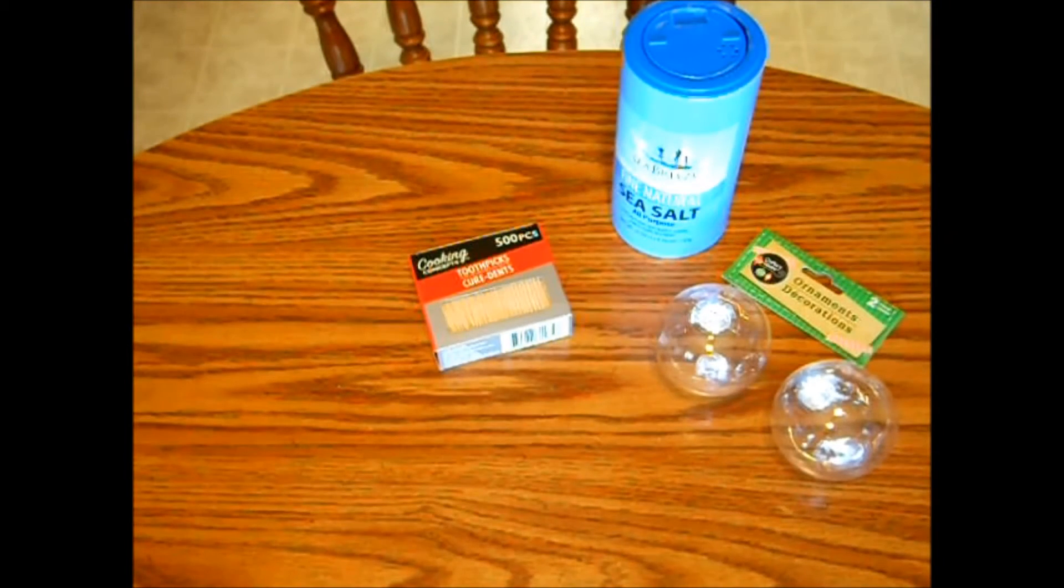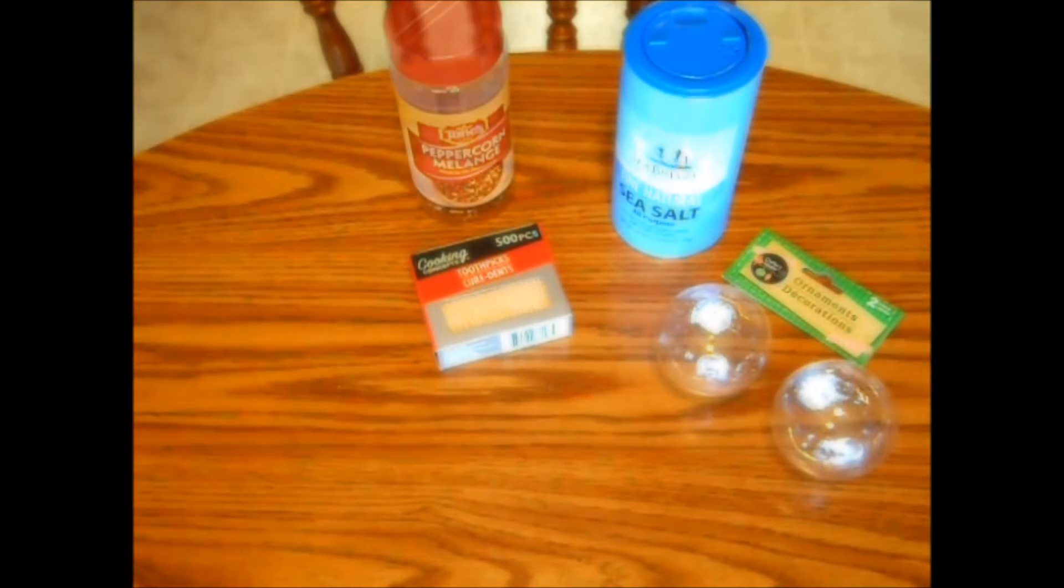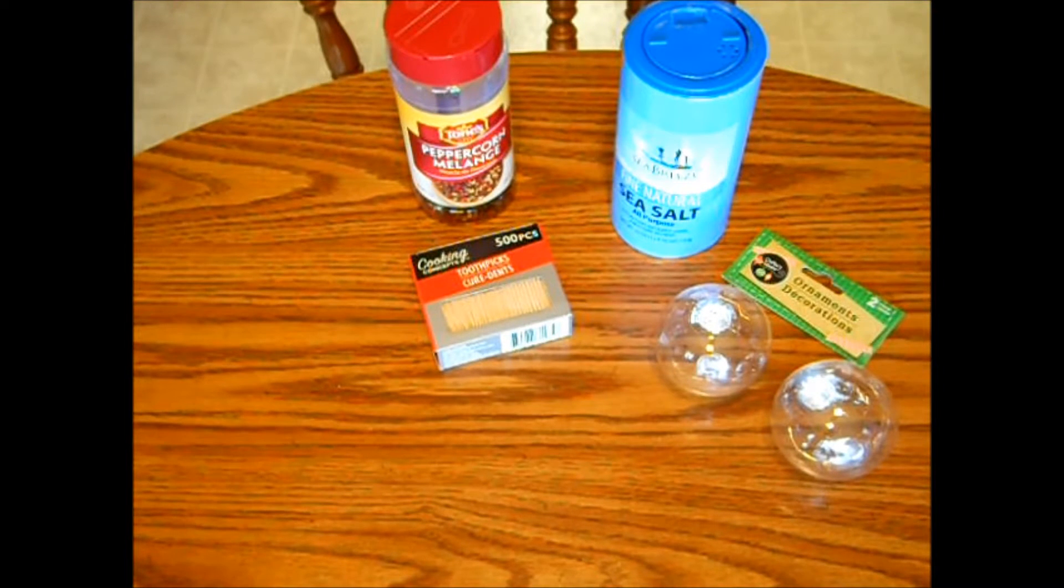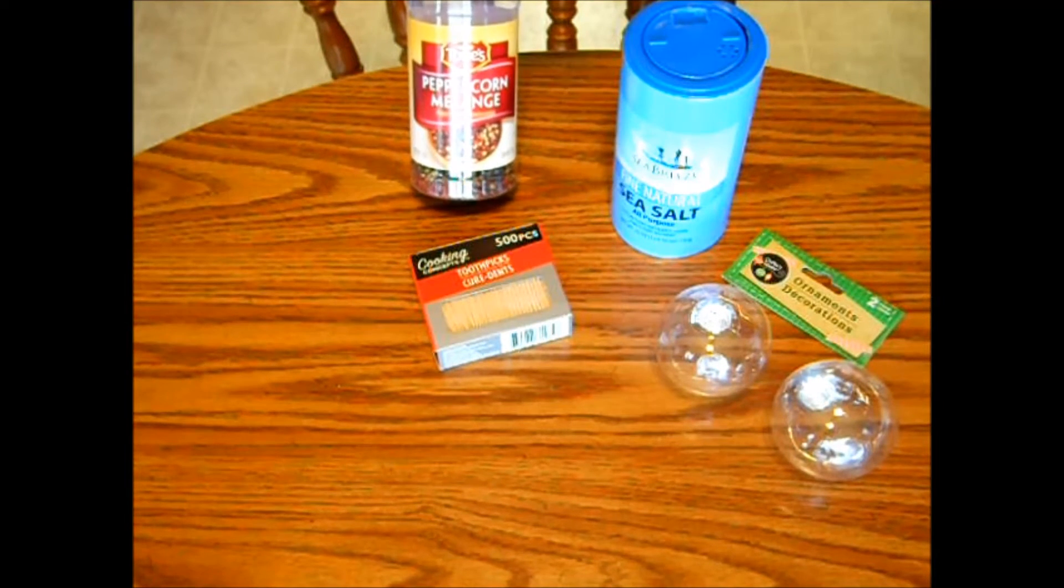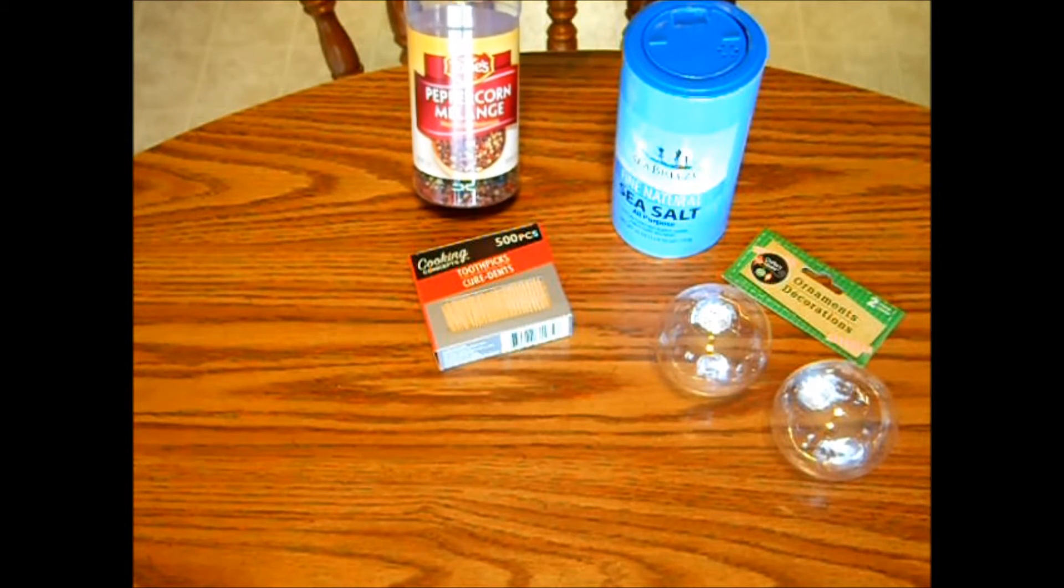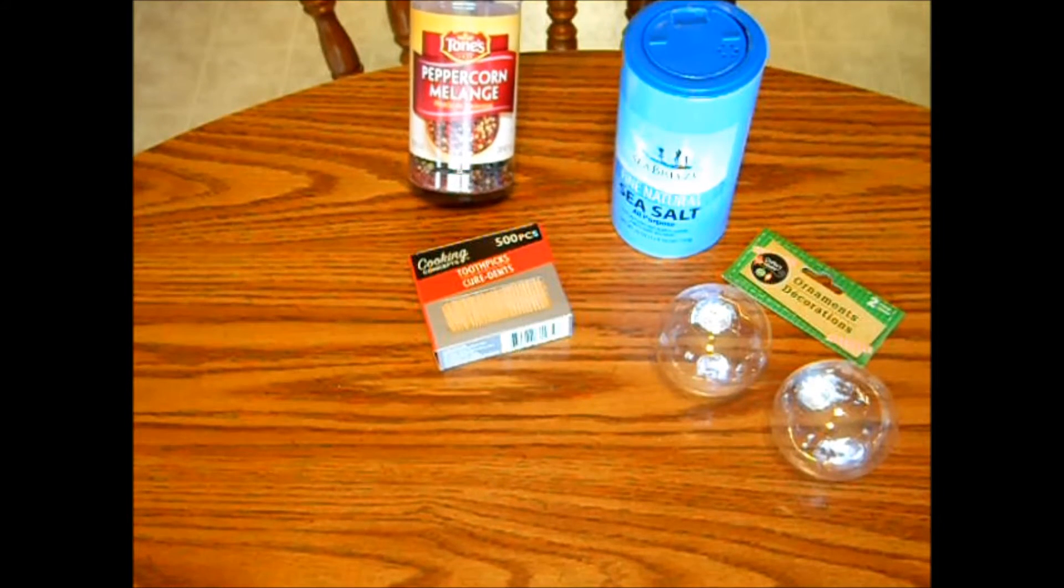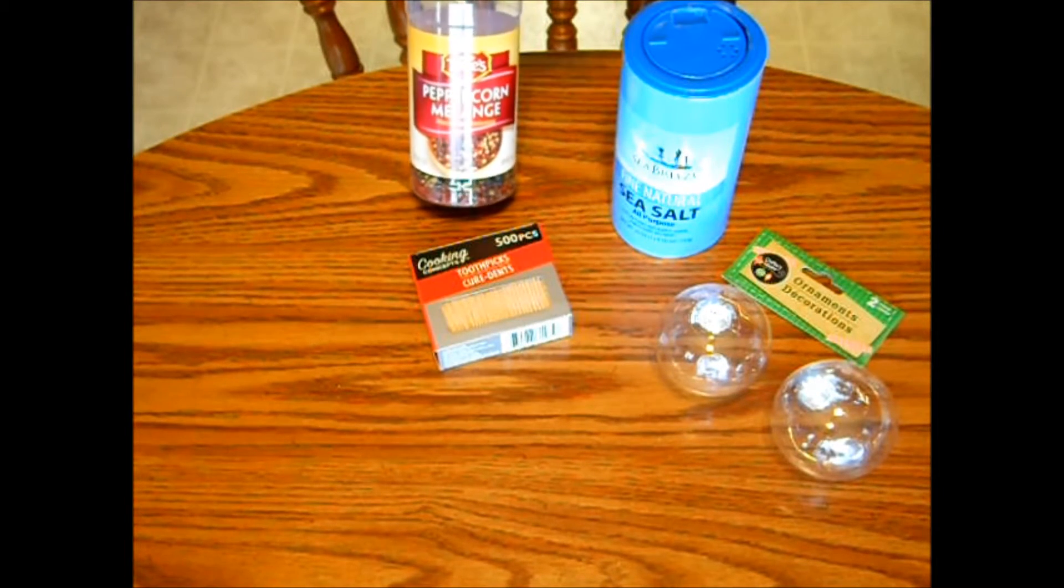You're also going to need some toothpicks. Now I also got these toothpicks at the Dollar Tree for a dollar. You're also going to need some peppercorns. I already had these in my cabinet, so I did not have to buy these, but I do know that they do have peppercorn grinders at the Dollar Tree. Now this is a mixed color peppercorns, and we only want black for the eyes and the coals for the buttons of the snowman. So I'm just going to dig through here and get seven black peppercorns.